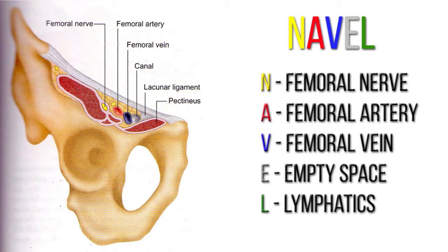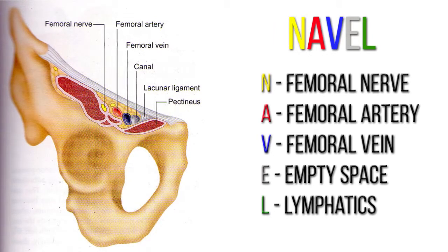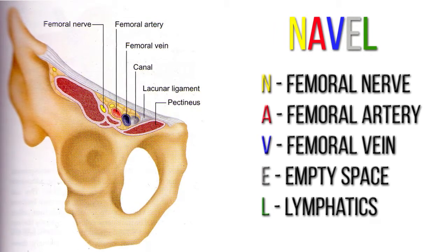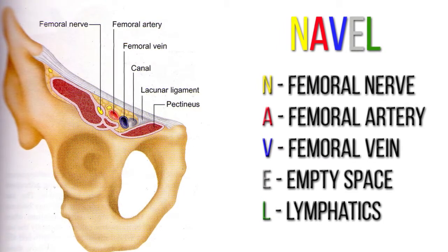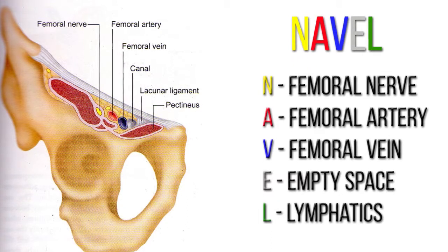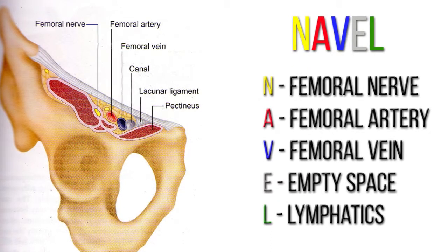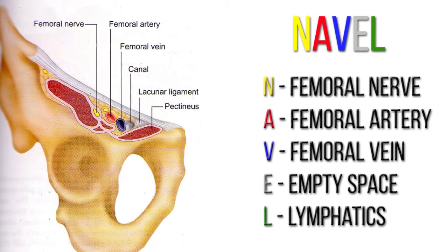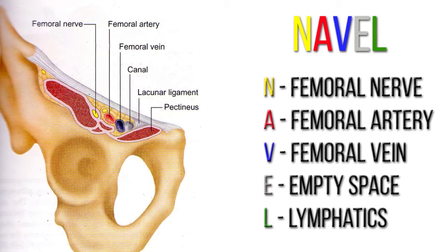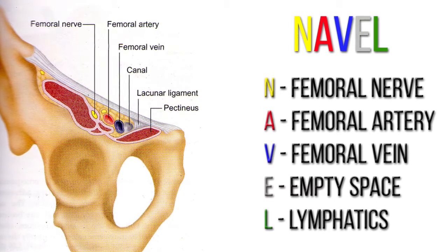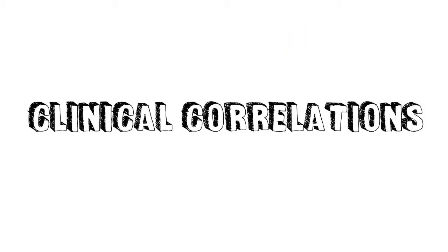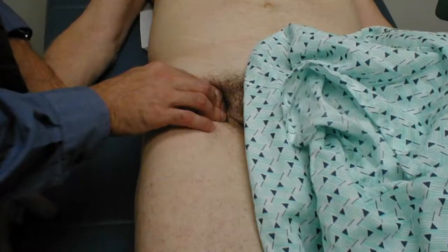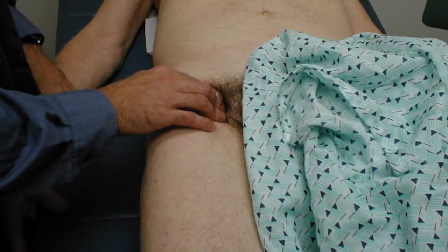The contents of the femoral triangle from lateral to medial can be remembered using the acronym NAVEL. N stands for nerve, which is the femoral nerve; A for artery, which is the femoral artery; V for vein, which is the femoral vein; E for empty space; and L for lymph, which includes the deep inguinal lymph nodes and associated lymphatic vessels.